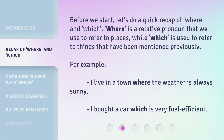Before we start, let's do a quick recap of 'where' and 'which'. 'Where' is a relative pronoun that we use to refer to places, while 'which' is used to refer to things that have been mentioned previously. For example: 'I live in a town where the weather is always sunny.' 'I bought a car which is very fuel efficient.'